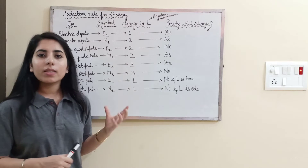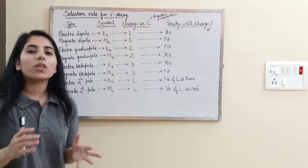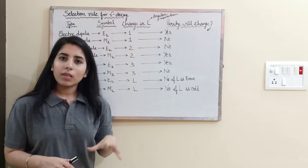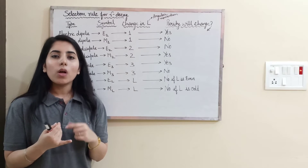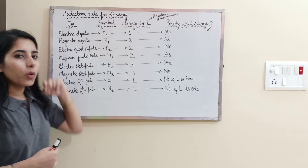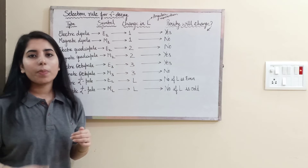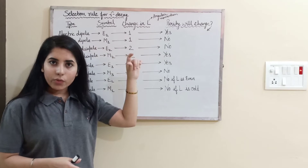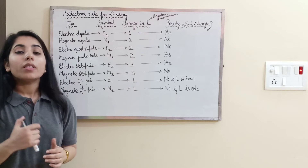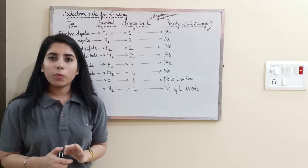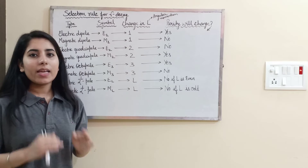To memorize this table, it is simple and easy. Make a column — first term corresponds to dipole, second to quadrupole, then octopole, and last to 2-to-the-power-L pole. Write electric first, then magnetic. For change in angular momentum, directly write 1, 1, 2, 2, 3, 3, and then L, L.